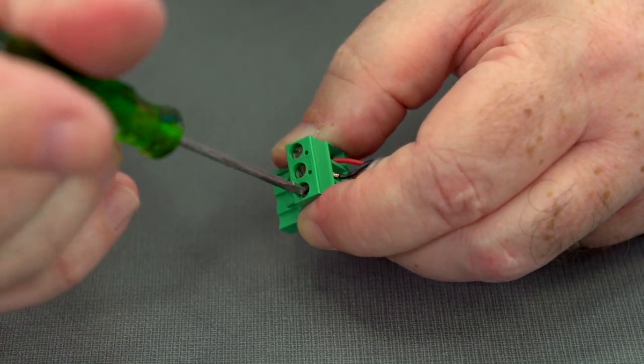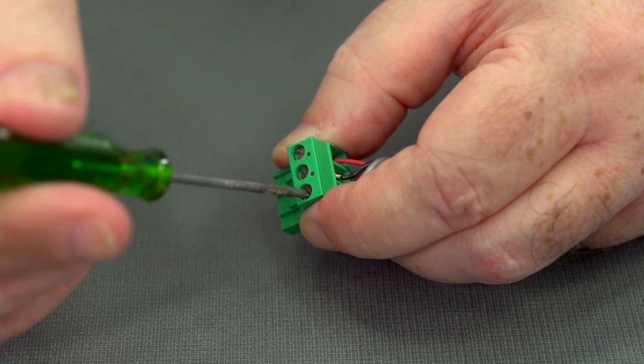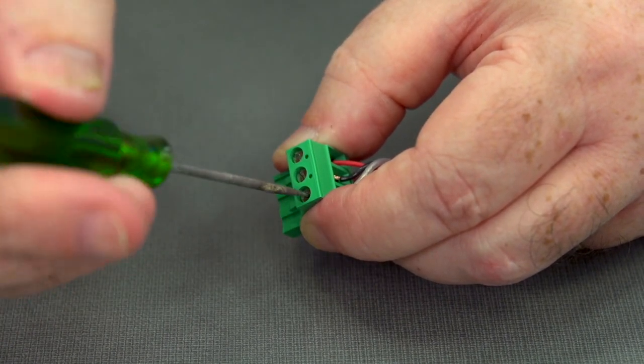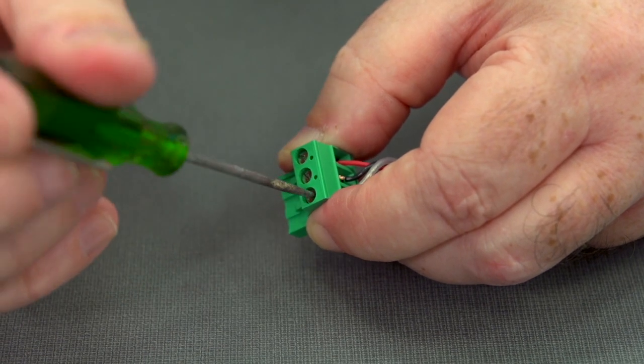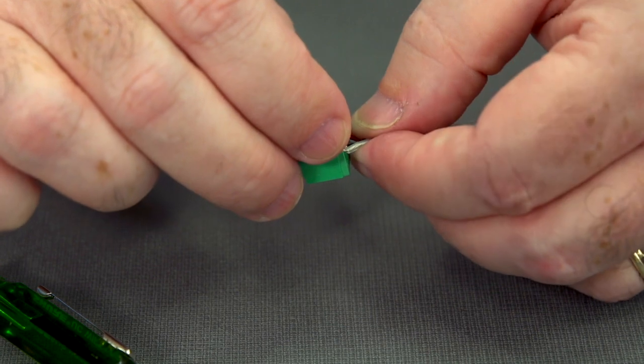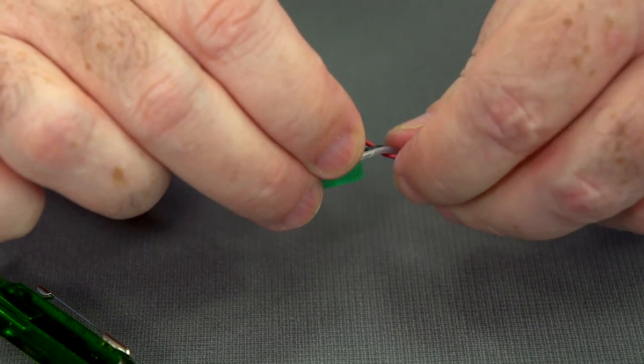That's the nice thing about a captive screw is that you can redo it very easily. We'll screw that gate out and reinsert our wire properly.